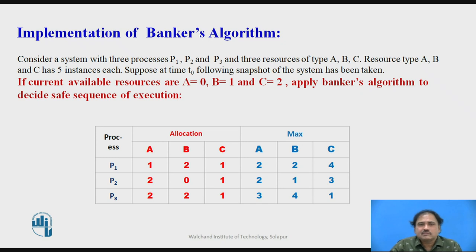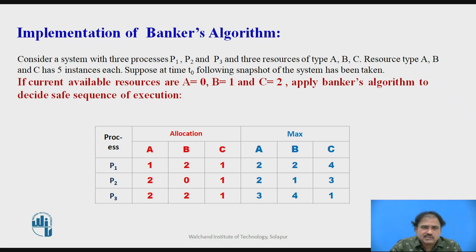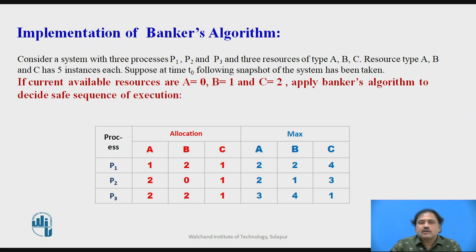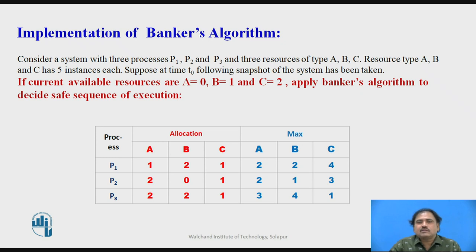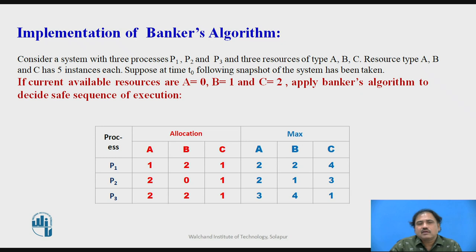Let me implement the concept with an example. The example shows two columns: allocation and max. There are three processes P1, P2, and P3, and resources A, B, C that they require to execute completely. Currently, the OS has allocated to P1: 1 instance of A, 0 of B, and 1 of C. For P2 it is 2, 0, 1 and for P3 it is 2, 2, 1.